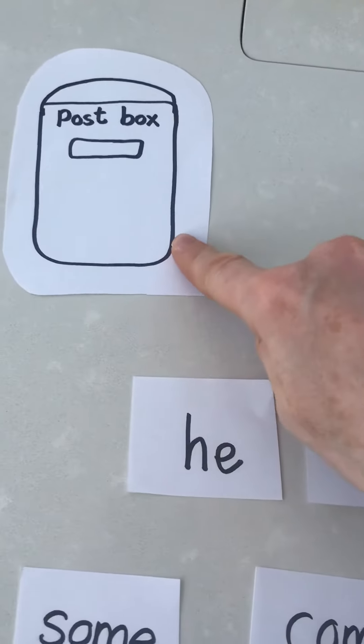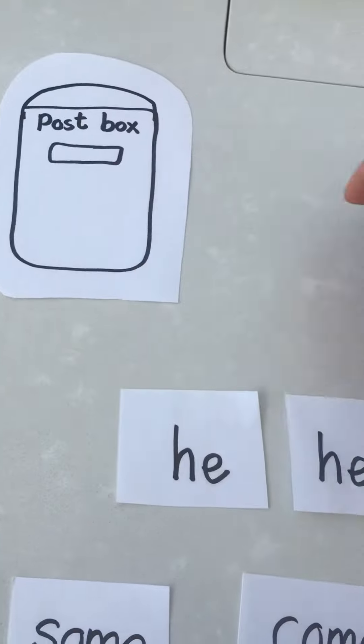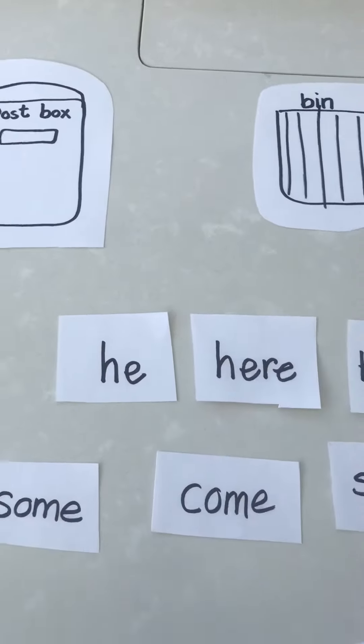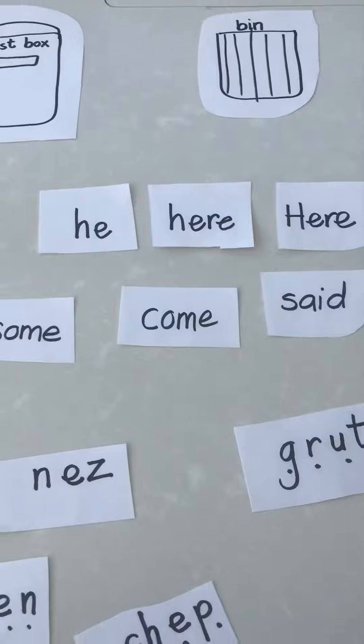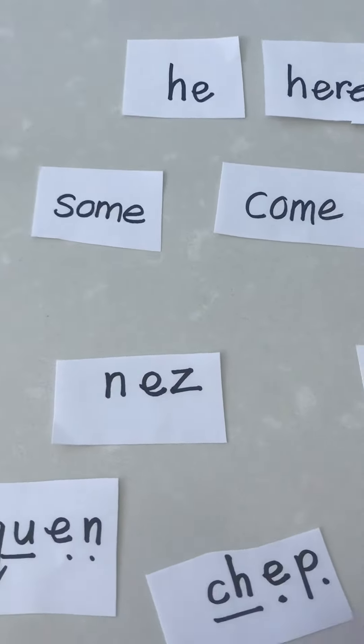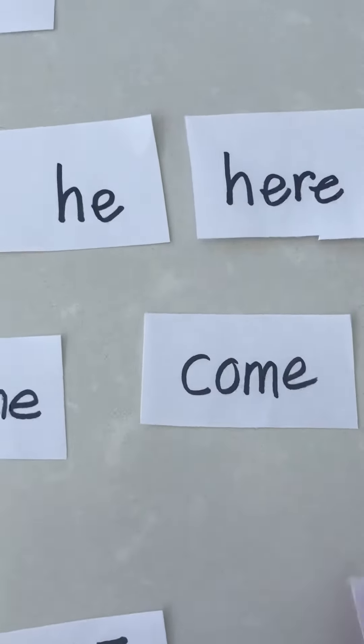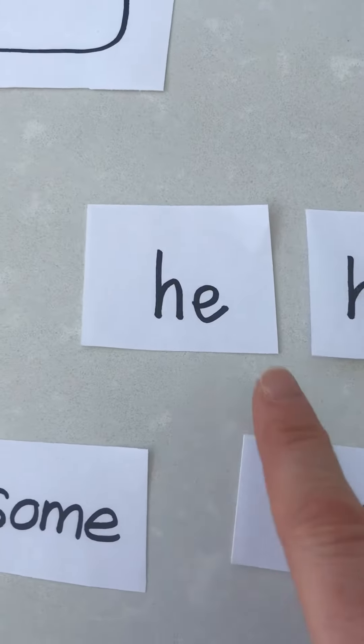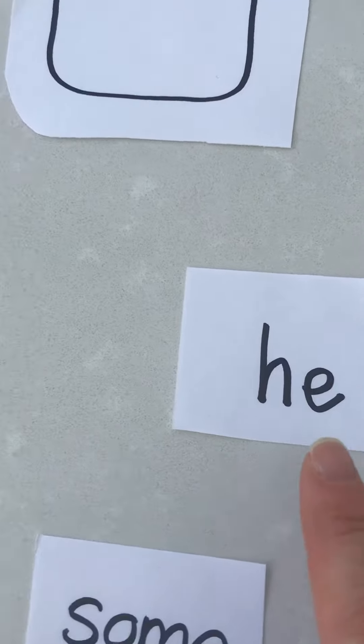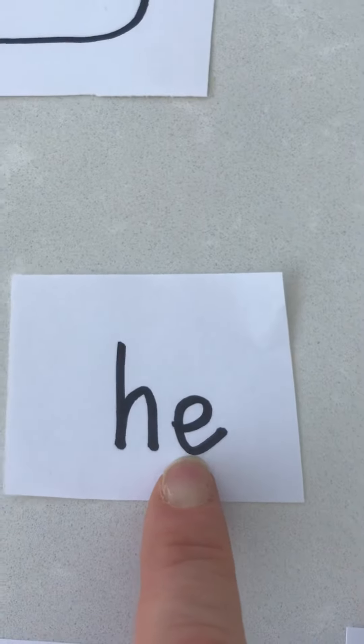So first of all you have to make a post box, you could color it in green, and you have to make a bin. Then you have to make a selection of words. Now the idea is that you'll have some nonsense words and you'll have some real words. Now these are our tricky words for this week. So we're going to start off with this. It's he. He is a tricky word,